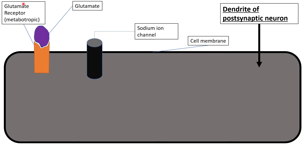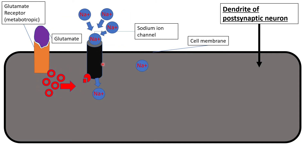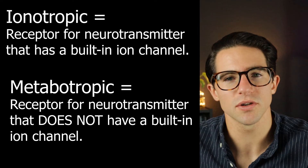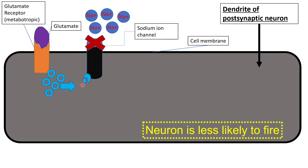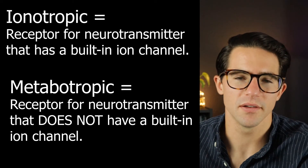When it comes to metabotropic receptors, they are the type of receptor we talked about in the video on synaptic transmission. They are just the receptor, and then there's a separate ion channel nearby. When the metabotropic receptor binds glutamate, it causes a chemical reaction inside the cell that causes the nearby sodium channel to open up. The net result is the same — it allows sodium into the cell — it's just a different structure doing it. Some metabotropic receptors can actually close that sodium channel and cause the cell to be less likely to fire, though those are less common.